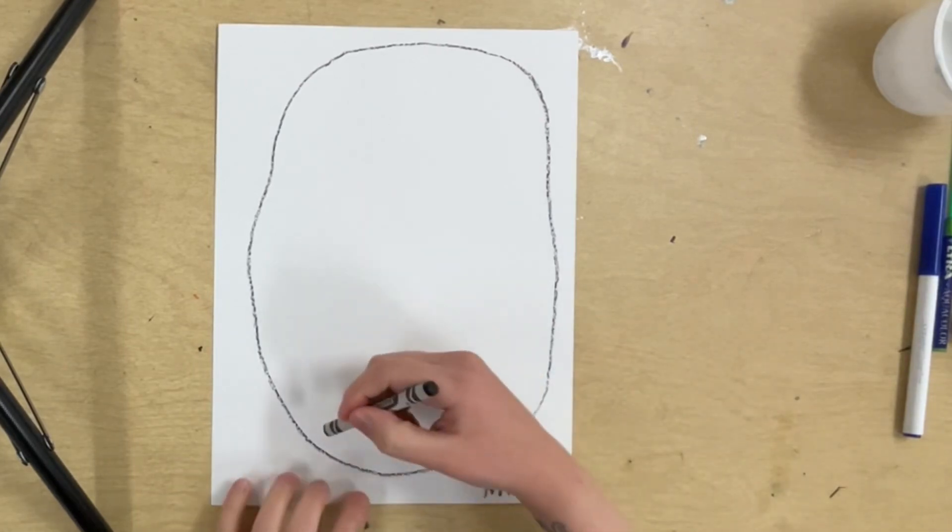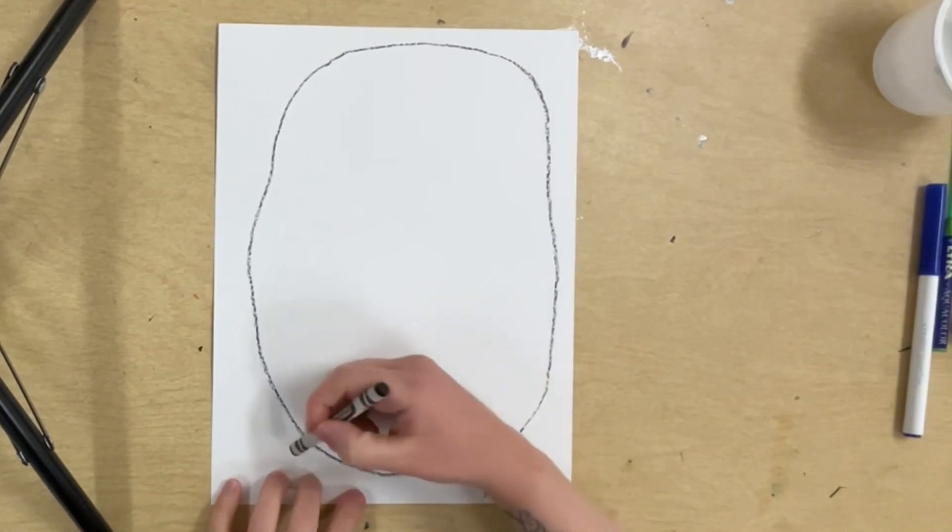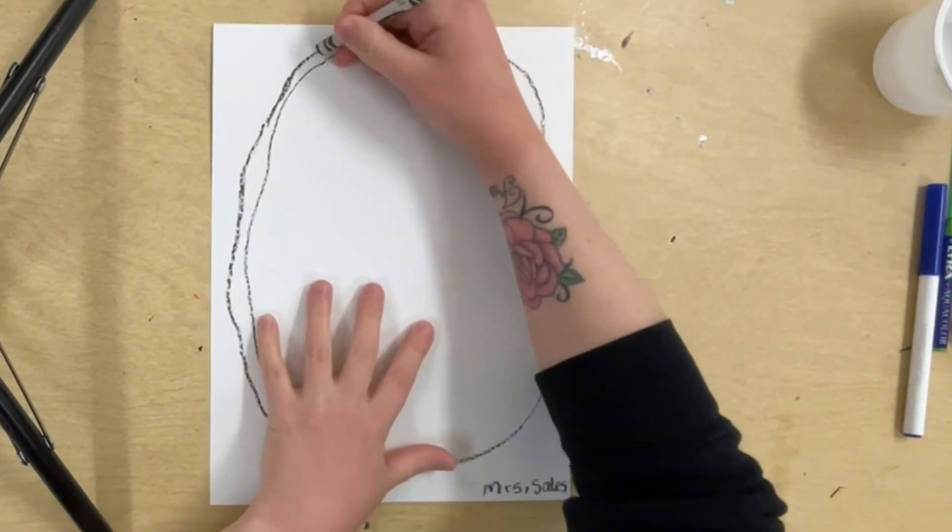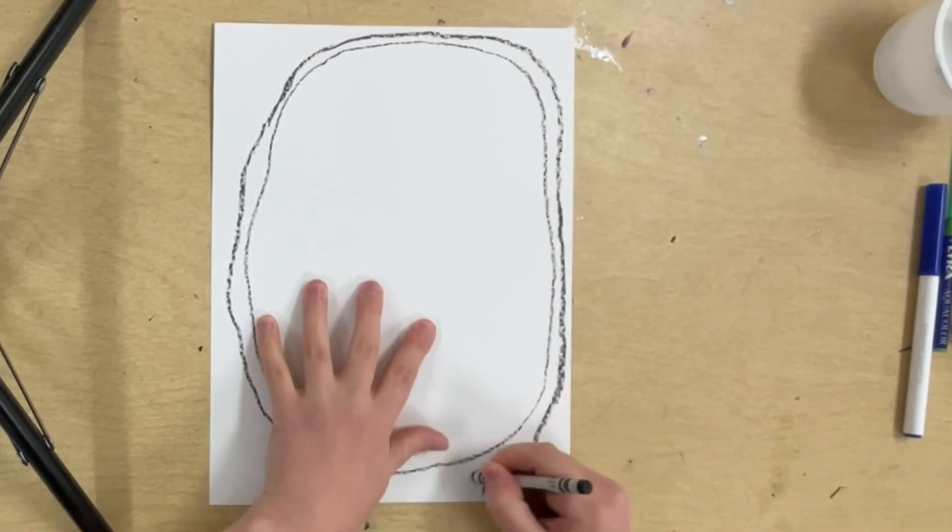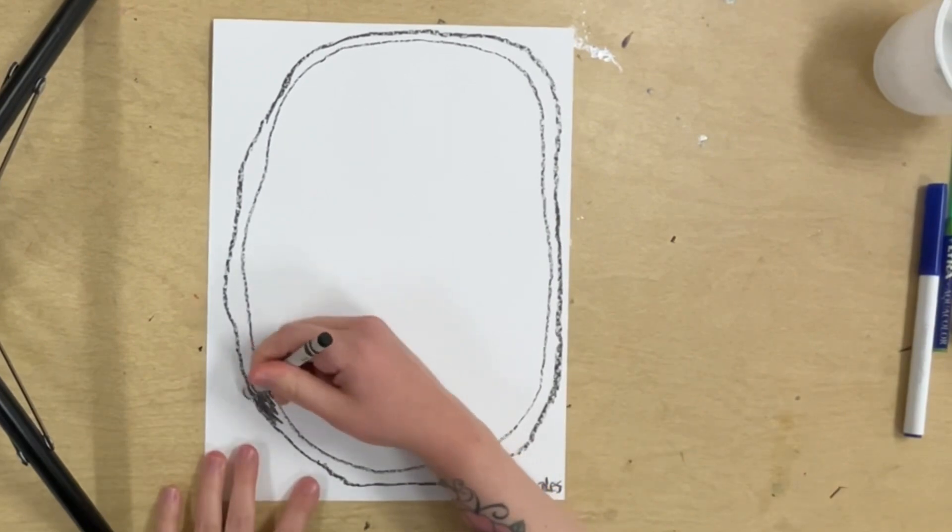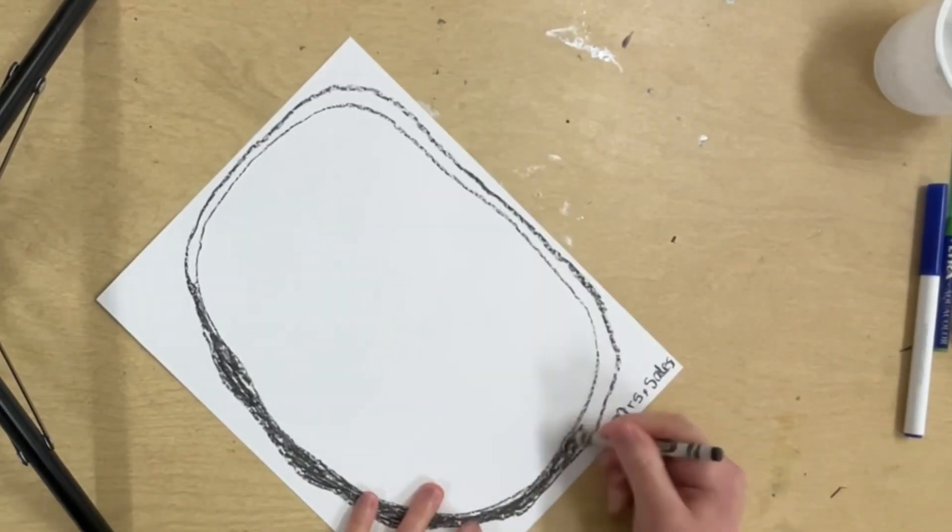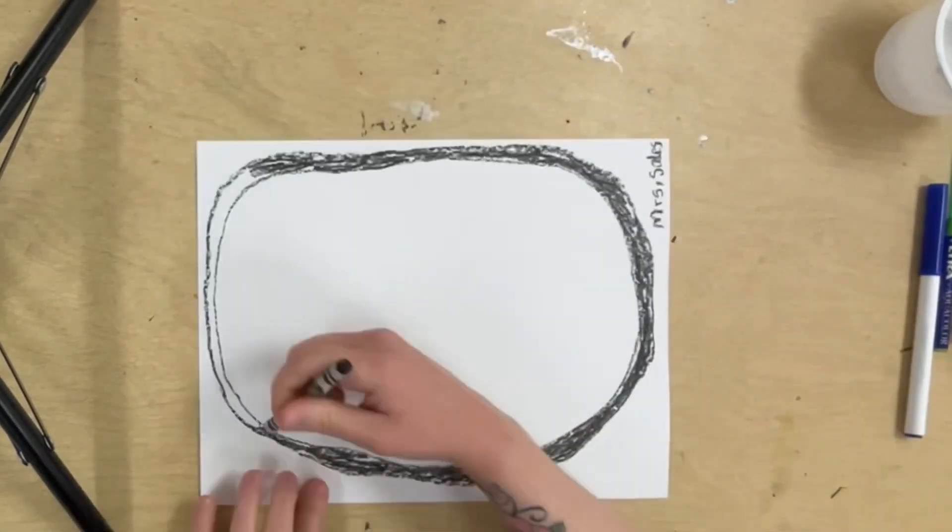Next I'm going to draw another imperfect oval around or inside this one, just to make the line thicker. Because this is the outer layer of our geode, this is the plain old rock part. So I'm just going to color that in with the black.